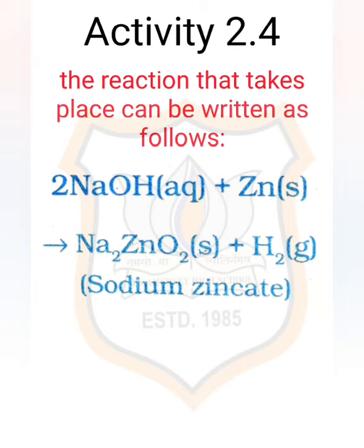Now let us discuss Activity 2.4, to show the relationship between bases and metals. Place a few pieces of granulated zinc metal in a test tube and add 2 ml of sodium hydroxide solution — this time it is the base — and warm the contents of the test tube. Repeat the rest of the steps as in Activity 2.3. The reaction is: 2NaOH (sodium hydroxide solution) plus zinc granules gives sodium zincate with the release of hydrogen gas. Remember, such reactions are not possible with all metals.